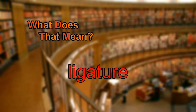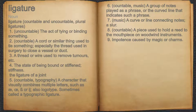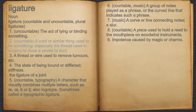What does ligature mean? Ligature. Noun. 1. Uncountable, the act of tying or binding something. 2. Countable, a cord or similar thing used to tie something, especially the thread used in surgery to close a vessel or duct.